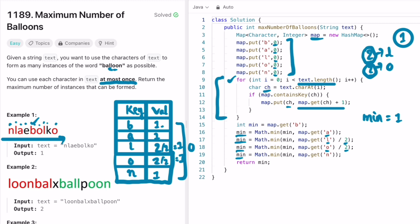I'm updating each min variable by getting the count of all the characters used to form the word balloon, starting with B through N: B, A, L, O, N. L and O will be divided by two because in one balloon word you're using two L's and two O's. Finally you're returning the variable min, and in this case min is going to have one only, so one will be returned as output.